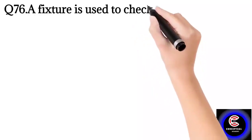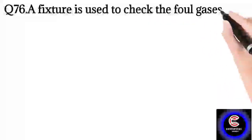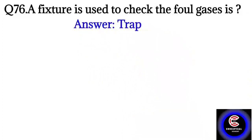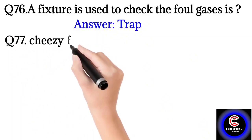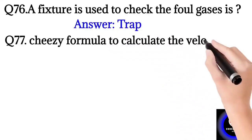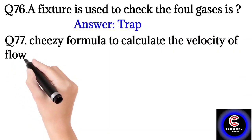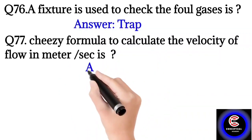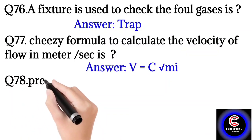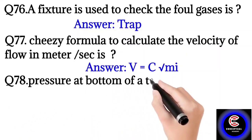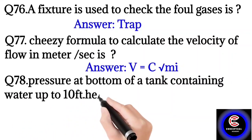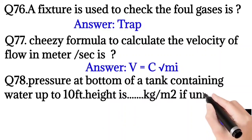Question number 77: Chezy formula to calculate the velocity of flow in meter per second is? So the answer is velocity is equal to C times square root of MI. Question number 78: Pressure at bottom of a tank containing water up to 10 feet height is kg/m² if unit weight of water is 1000 kg/m³? So the answer is 10,000.